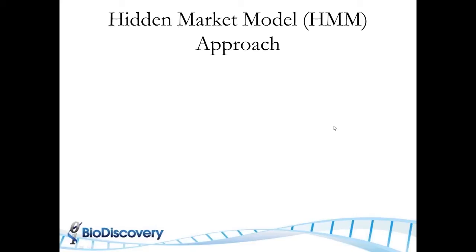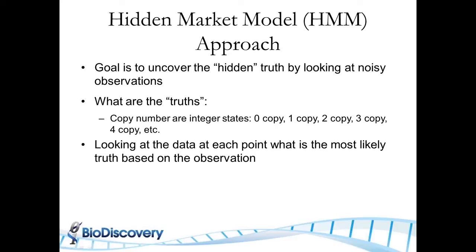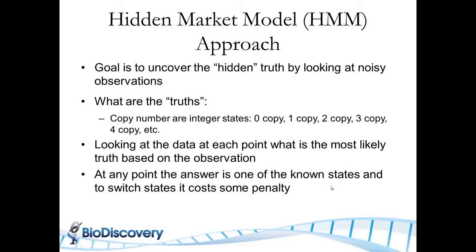So the HMM approach to this question is given the idea behind the Markov model is that there are a set of hidden truths that are covered, but you don't see them. They're hidden, but you see noisy observations. So what are the truths in copy number estimation? The truth is that there are integer states: zero copy, one copy, two copy, et cetera. And you're making measurements, noisy measurements, and based on these noisy measurements, you're trying to say at the particular point which state is the right one. Most likely probability that is a one copy state, two, and so forth.